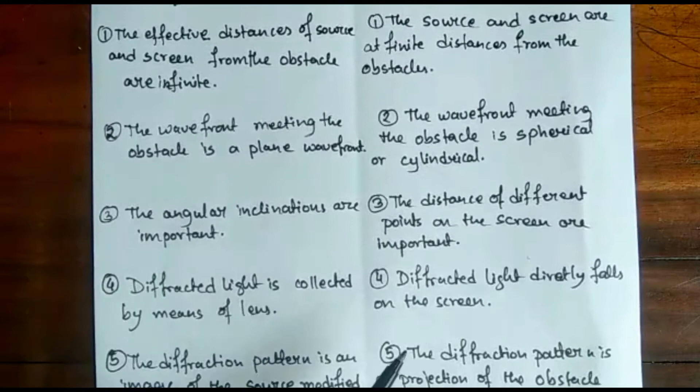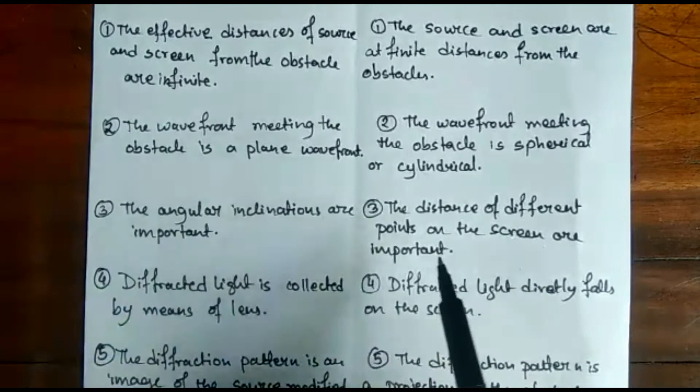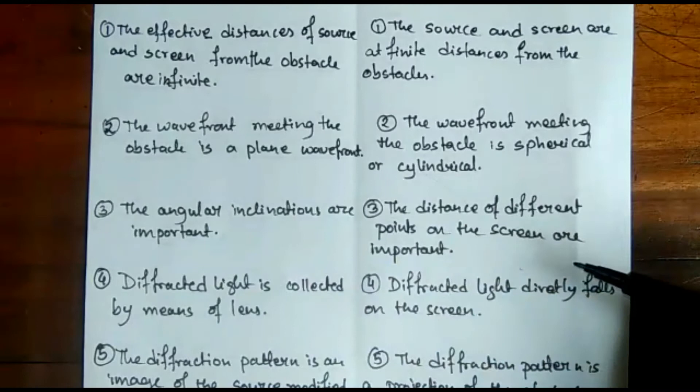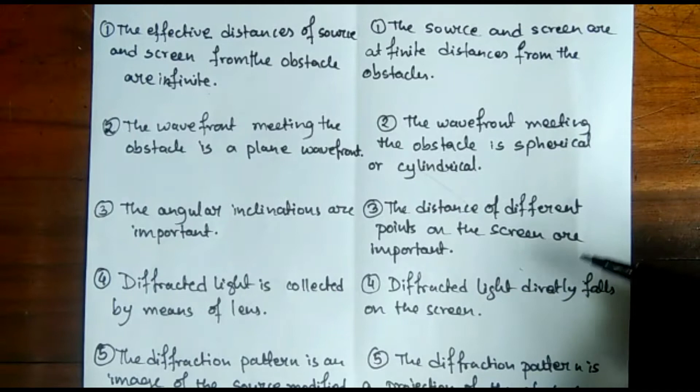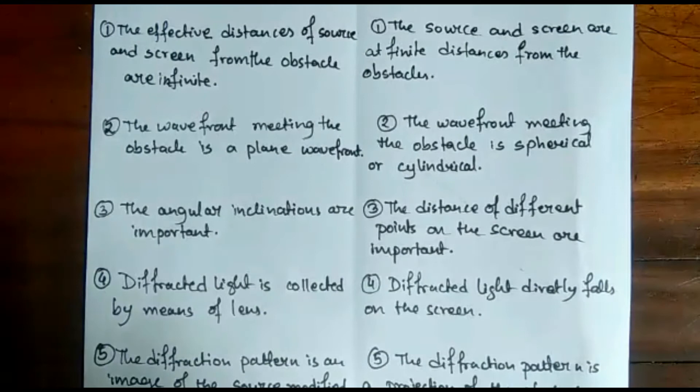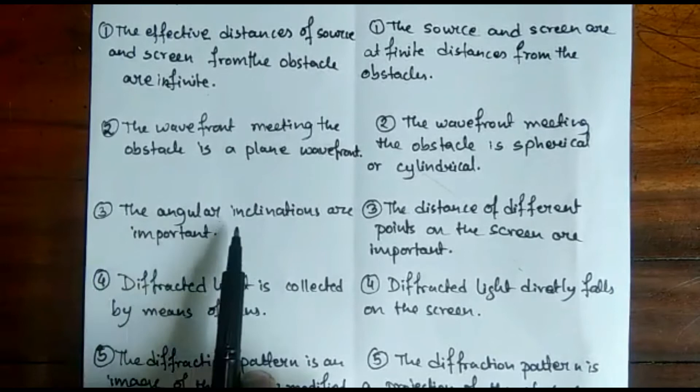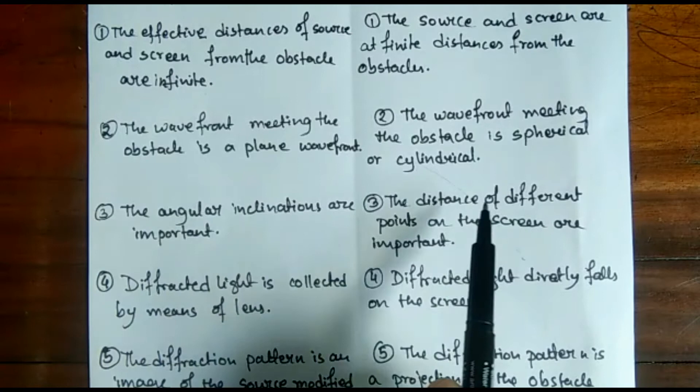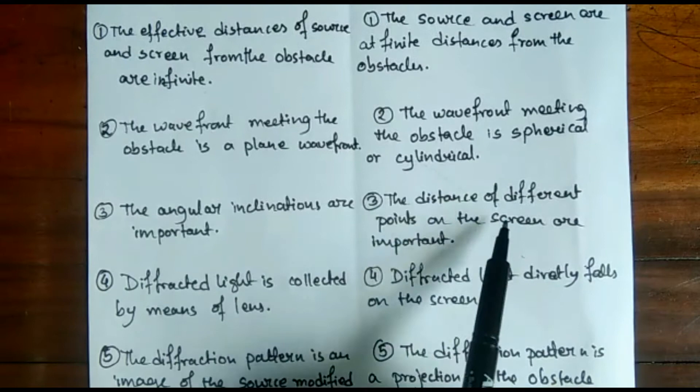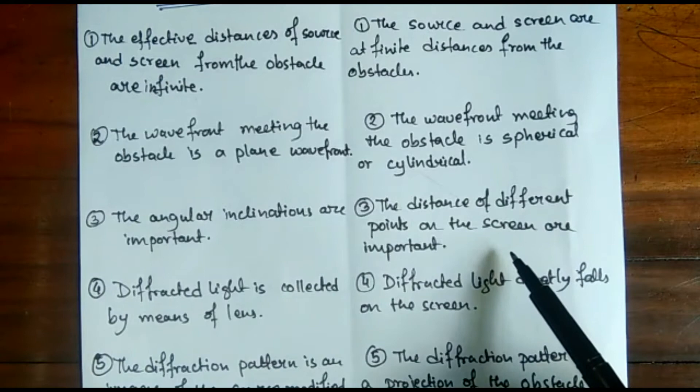The third point is that angular inclinations are important for Fraunhofer diffraction, but for Fresnel diffraction the distances of different points on the screen are important. This is because, as the distance is infinite for Fraunhofer, to get the diffraction pattern on the screen we need to know the static angular inclinations. But for Fresnel diffraction, the distances of different points on the screen are important because they are already at a finite distance, so the points on the screen matter.